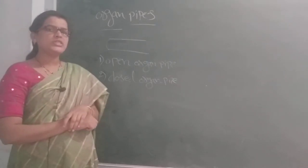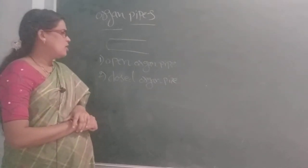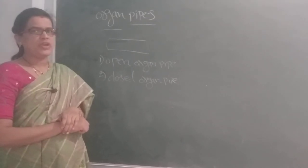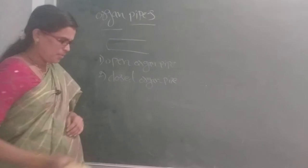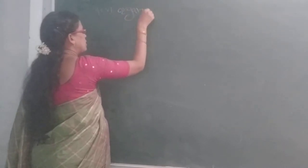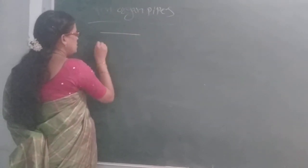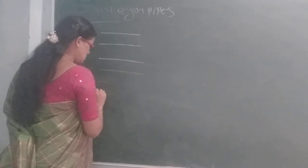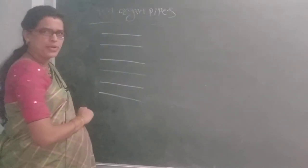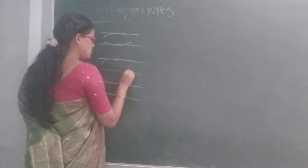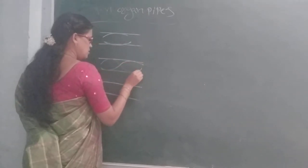So first, how are stationary waves formed in an open organ pipe? And at the same time in a closed organ pipe, stationary waves are formed. First of all, let us see about the frequency ratios in open organ pipes. I am taking three open organ pipes with some vibrations, and here we get stationary waves. We can observe stationary waves in open organ pipes.